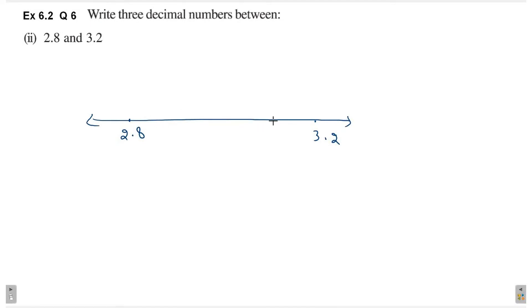Now between these, there are infinite number of decimal numbers. Like 2.81, 2.93, 3.19, you can write many such numbers.